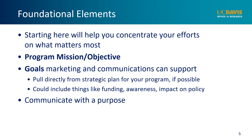I always put the program's mission or objective at the top, then read through the goals listed in the strategic plan looking for things that marketing communications can help achieve — things like increased funding, awareness, or impact on public policy. Starting here helps us communicate with a purpose. Knowing why we are communicating will shape the things we are saying. Now if you don't have a strategic plan in place, that is fine. This part may just take you a little longer. Take the time to really think through what you are trying to accomplish by getting the word out.